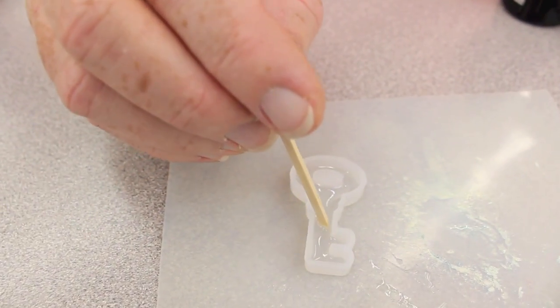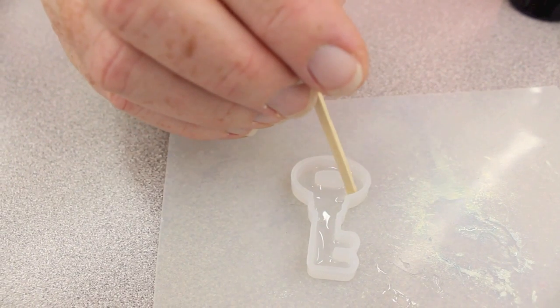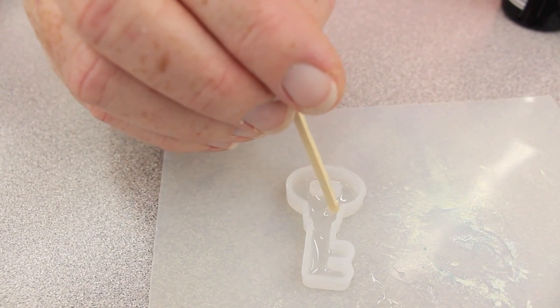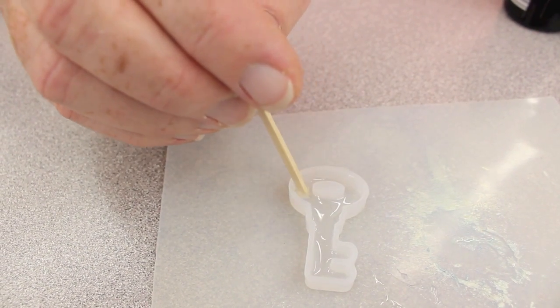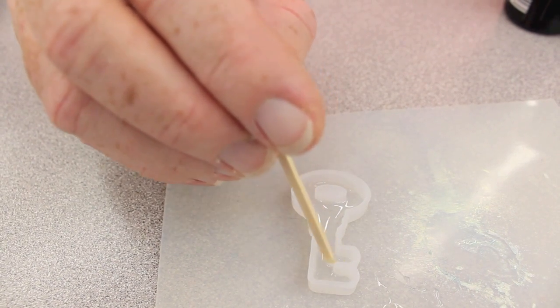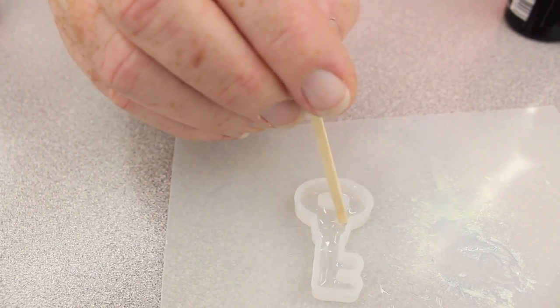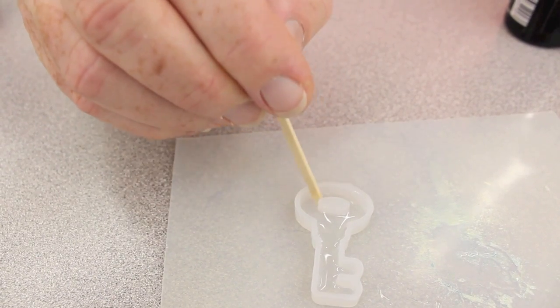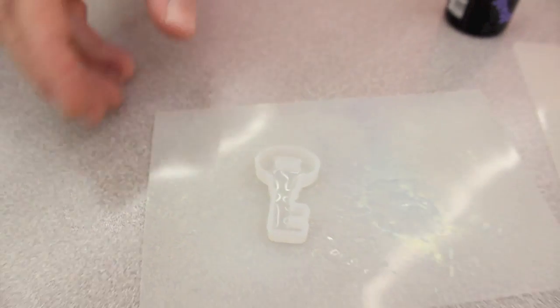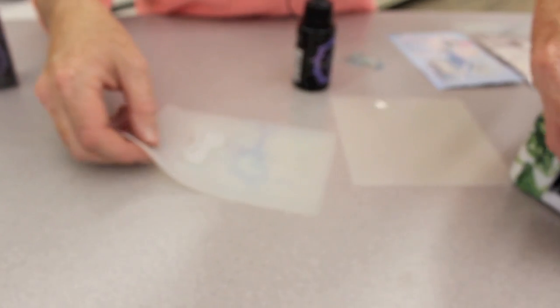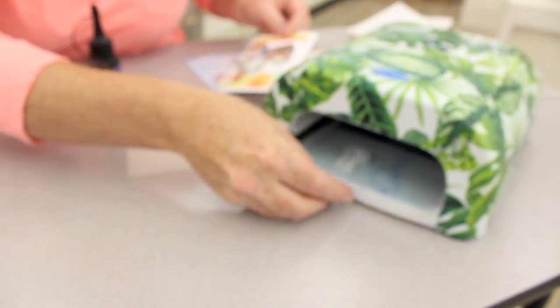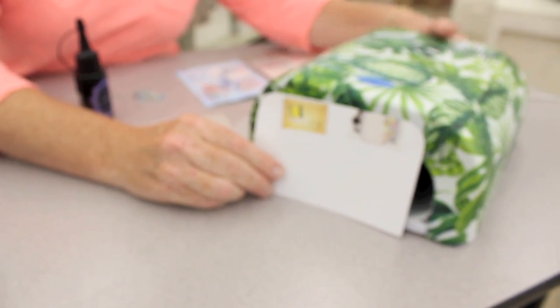All right, now if we were to fill this entire mold up with the resin at one time, it will take a long time for it to dry. So we're just doing a little bit in layers at a time. Okay, so I have a nice thin layer there at the bottom on my silicone mat and I'll put it inside the UV lamp and let it go for three minutes.